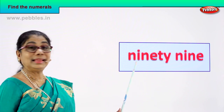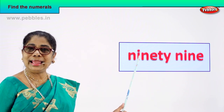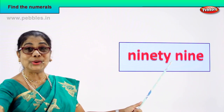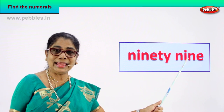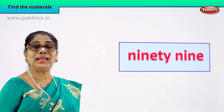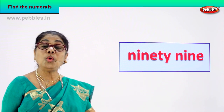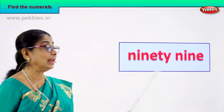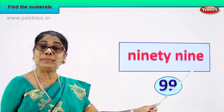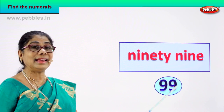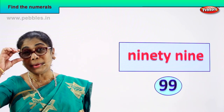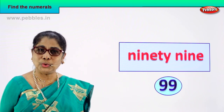Let's go to another number name. Read: N-I-N-E-T-Y, 90, N-I-N-E, 9 — very good, 99. How do we write this numeral? 99 can be written as 9 and 9, 99. Very good, you found the correct numeral!